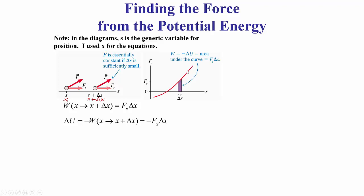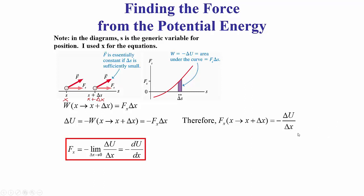Graphically, the work done was the area between the graph of force as a function of position and the position axis. We were letting delta s shrink to zero so that instead of looking at Riemann sums we were looking at an integral. If I rearrange the equation delta u equals negative f delta x, we get that the force equals negative delta u over delta x. In the limit that delta x shrinks to zero, that's the definition of a derivative, so the x component of the force is negative du/dx.